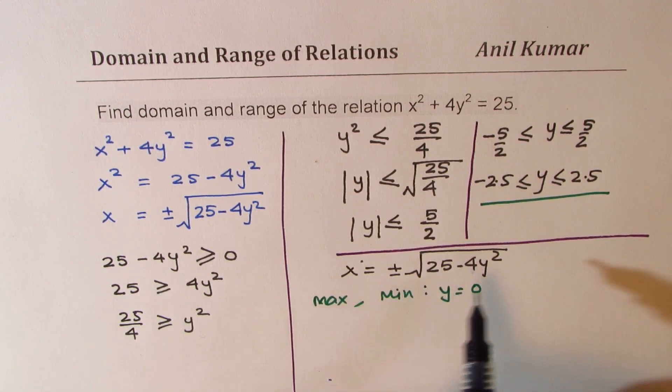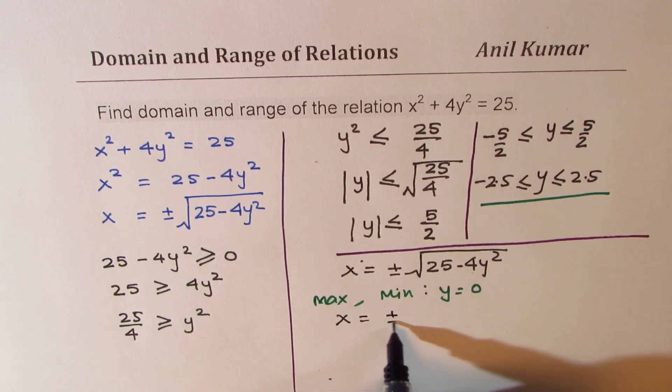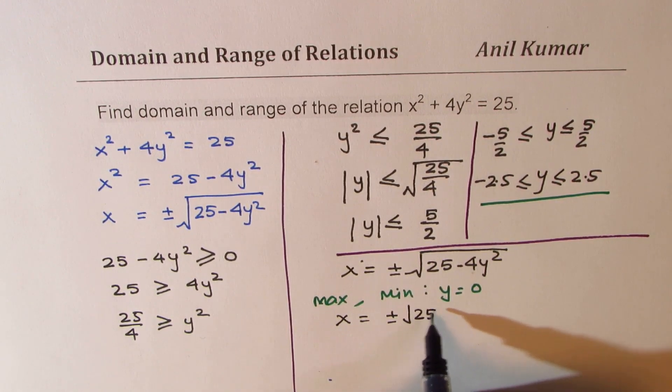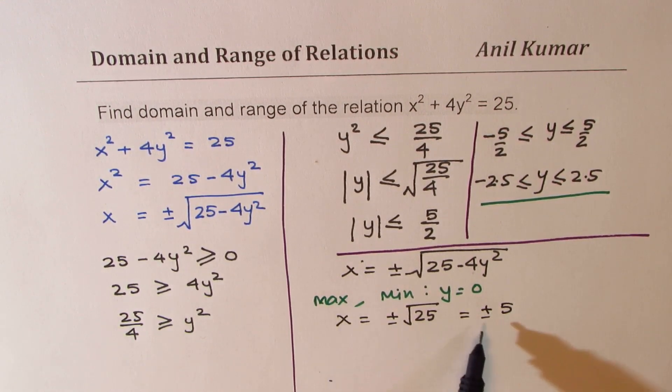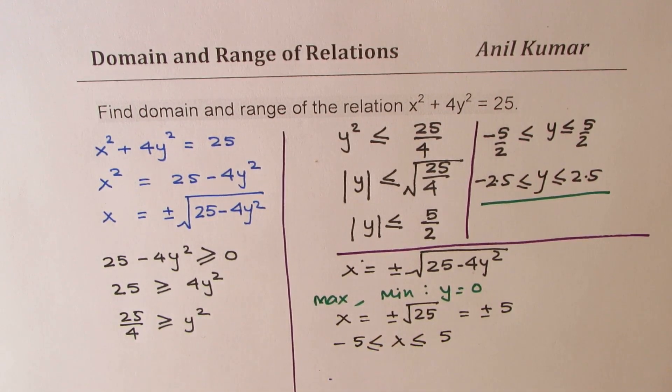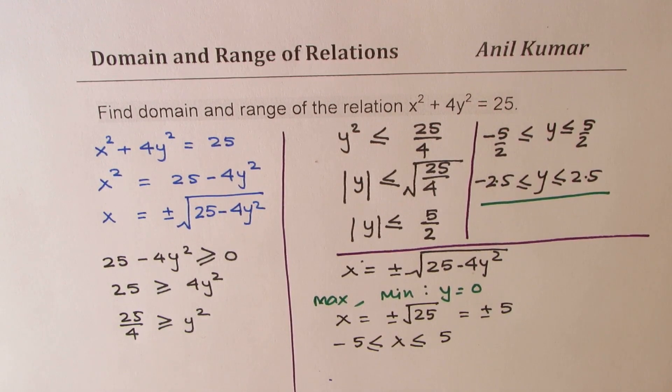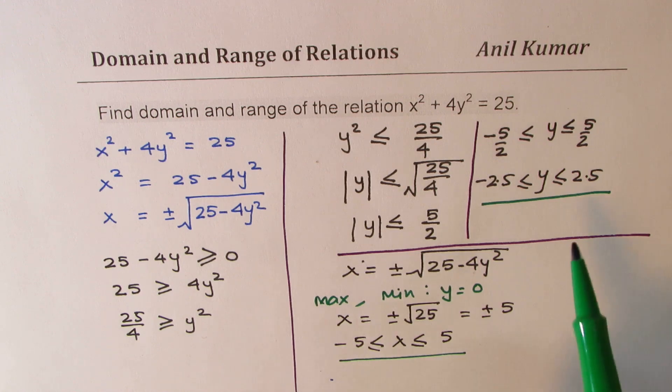So if y = 0, then we get x = ±√25 = ±5. So x is within ±5. The value of x is within +5 and -5. So that is how we get the restriction on x.